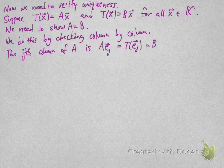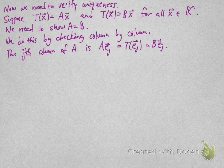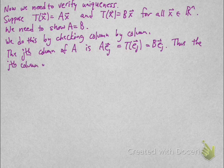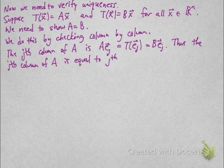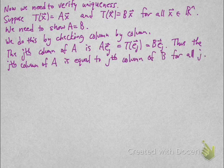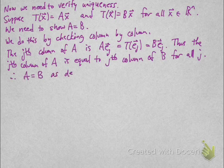But that's just T(E_j), which equals B times E_j. So the jth column of A equals the jth column of B for all j. Therefore, A equals B as desired.